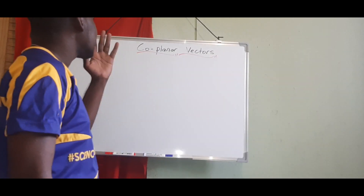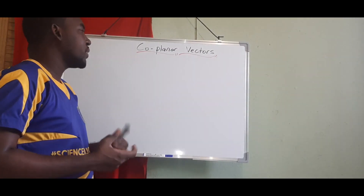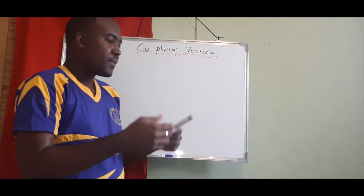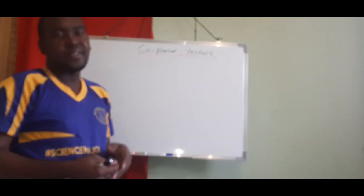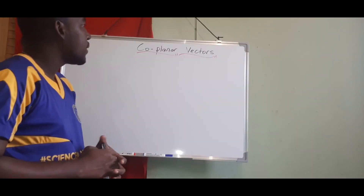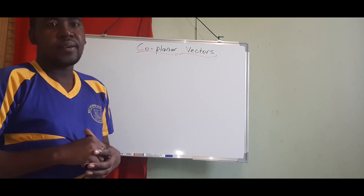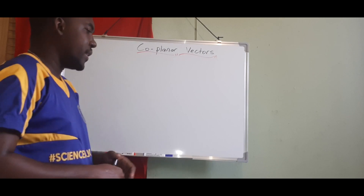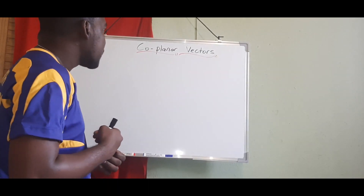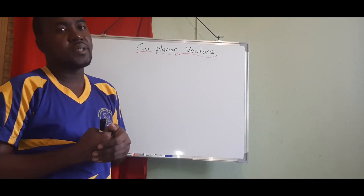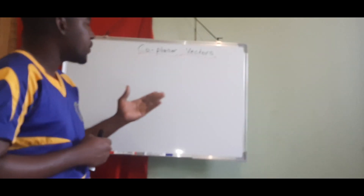Today we'll be looking at co-planar vectors. At a lower level you learn that vectors act linearly — if they're going in the same direction you add to get the resultant, and if they're in opposite directions you subtract. But we have vectors that actually occupy two planes at once; that's the meaning of co-planar vectors. So they can act in the x, the y, or the z plane. We're looking at resolving co-planar vectors to find the resultant vector.